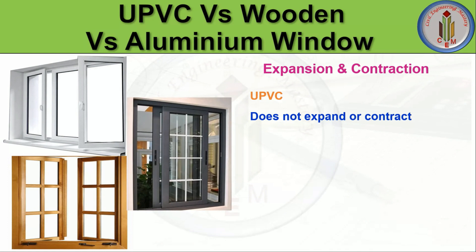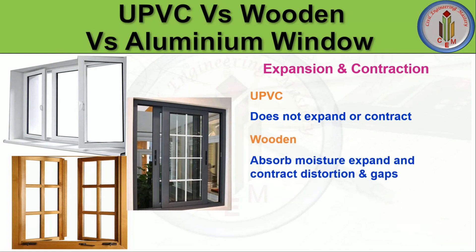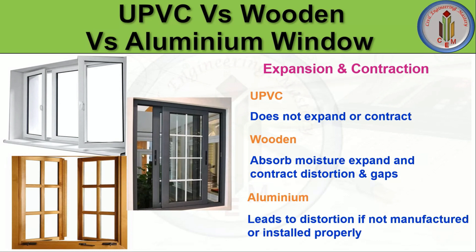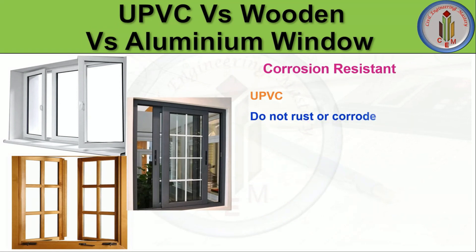Next is expansion and contraction. uPVC windows do not expand or contract since it is a plastic material — it is unaffected by environmental conditions. Wooden windows absorb moisture and expand and contract, creating distortion and gaps. For example, wooden doors or windows in your home may get loose or shift out of position due to temperature changes, requiring regular repair. Aluminium windows can also lead to distortion if not manufactured or installed properly.